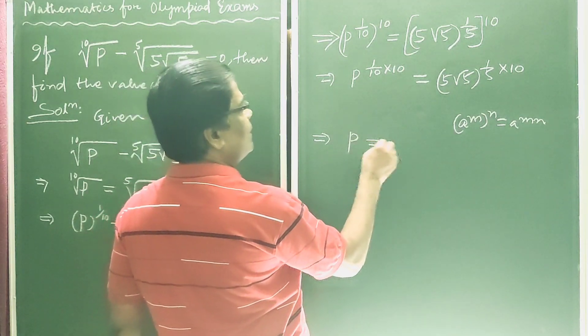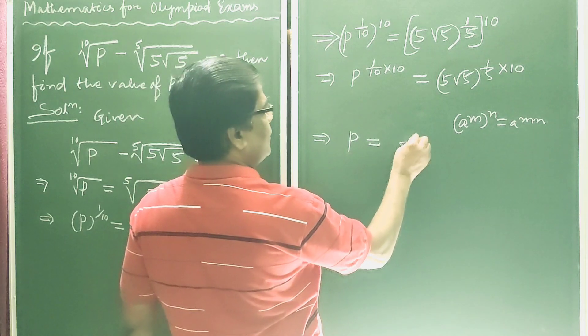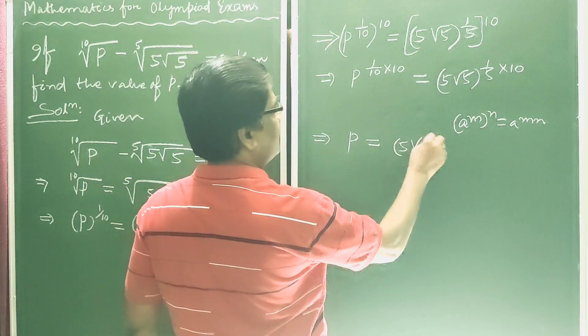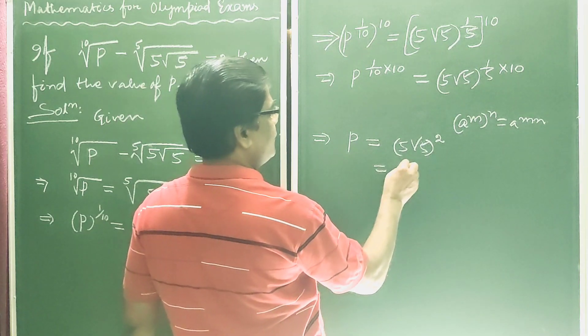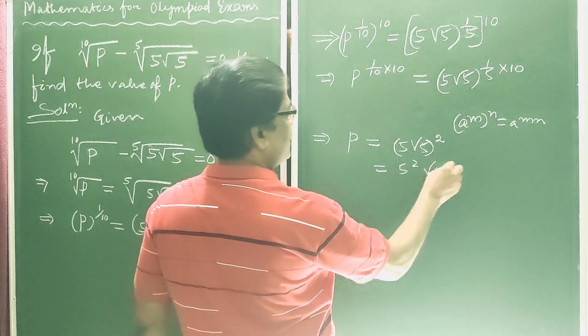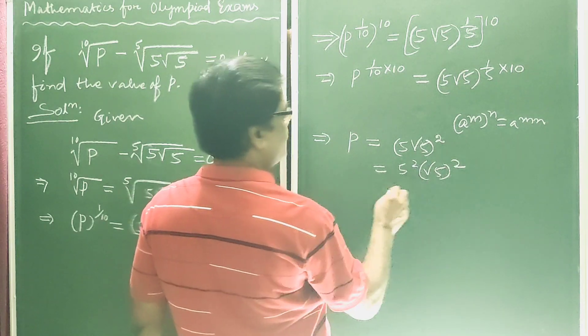p is equal to 5 into root 5 whole to the power 2. This is 5 square into root 5 square.